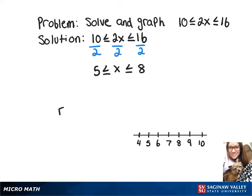So in our interval notation, it's going to be bracket 5 comma 8 bracket. Then we're going to put two closed circles, one on the 5, one on the 8, and then we're going to connect the two.